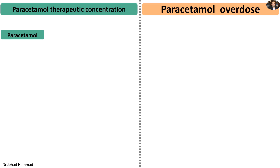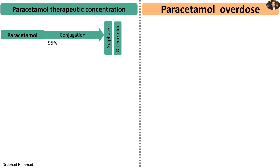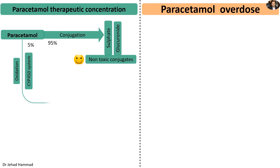Under recommended therapeutic doses, 95% of paracetamol is conjugated in the liver into both sulfate and glucuronide moieties, which are non-toxic conjugates that can be readily excreted by the kidney. However, a small percentage — around 5% of paracetamol — is oxidized by the cytochrome P450 isozyme system in the liver. This oxidation process results in the production of N-acetyl-P-benzoquinone imine, abbreviated as NAPQI.